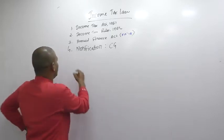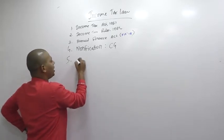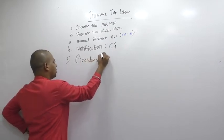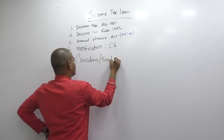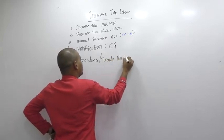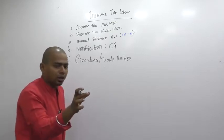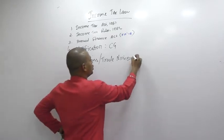Fifth, then there will be circulars or trade notices. These are issued in case of confusion to clarify certain points and this is issued by CBDT.